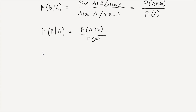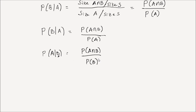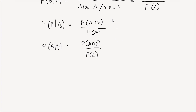Also, the probability of A given B is equal to P of A intersection B divided by the probability of B. Note that the probability of the given event goes in the denominator — if the given event is B, P(B) is in the denominator; if the given event is A, P(A) is in the denominator. And those are your conditional probability formulas.